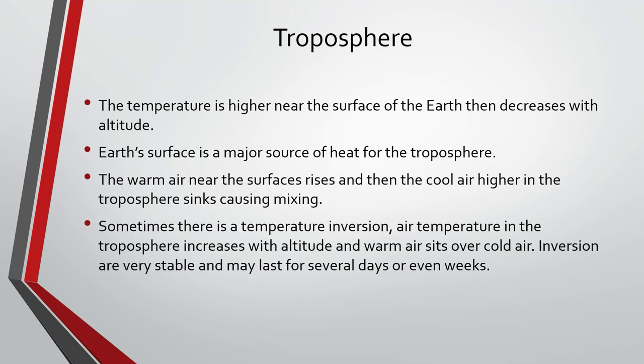Sometimes there are temperature inversions where air temperature in the troposphere will increase with altitude and warm air sits over cold air instead. Inversions are very stable and may last several days or even weeks. Some examples are over land at night or in winter when the ground is cold — the cold ground cools the air above it, making this low layer of air denser than the air above it. Near coasts, when the cold seawater cools the air above it, the denser air moves inland and slides beneath the warmer air that it finds there.